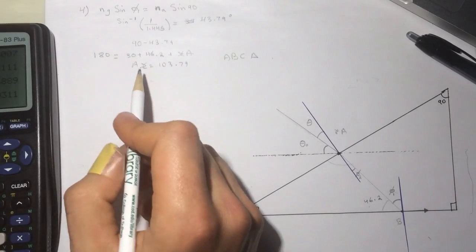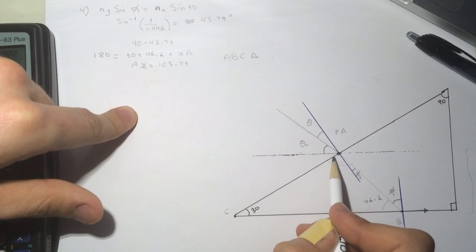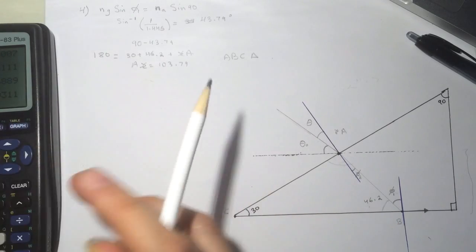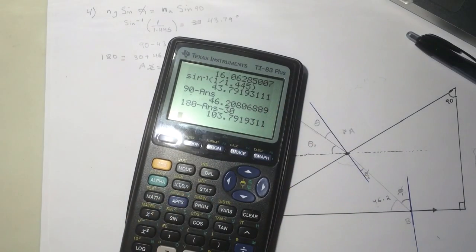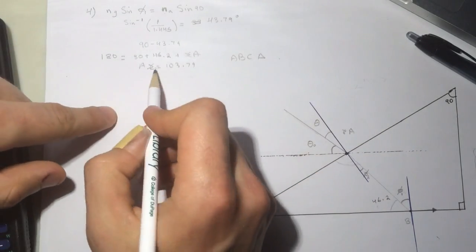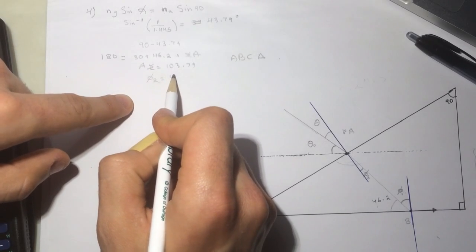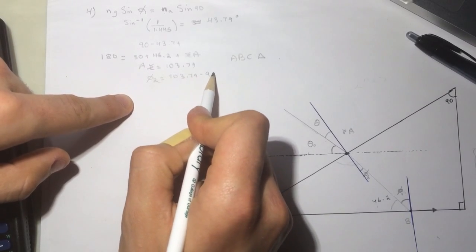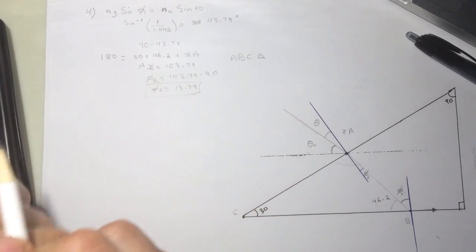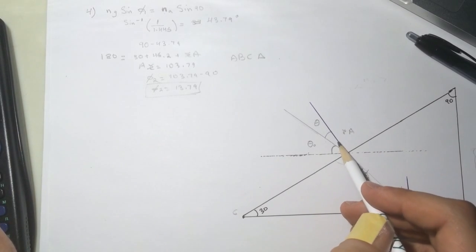We need to find the phi 2 here. This angle here, and this is perpendicular, the blue line is perpendicular to the line, the normal. Let's find this, which is the answer minus 90 degrees. We'll get 13.79. So our phi 2 will be equal to the angle A, which is 103.79 minus 90 degrees. So phi 2 will be equal to 13.79.